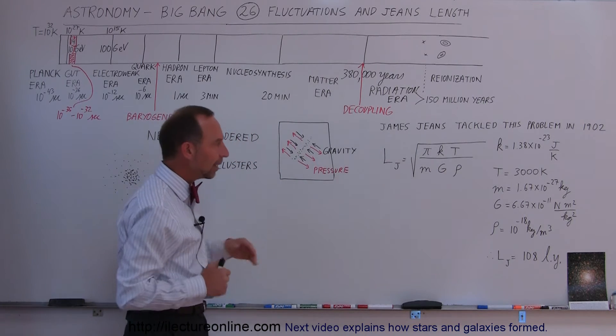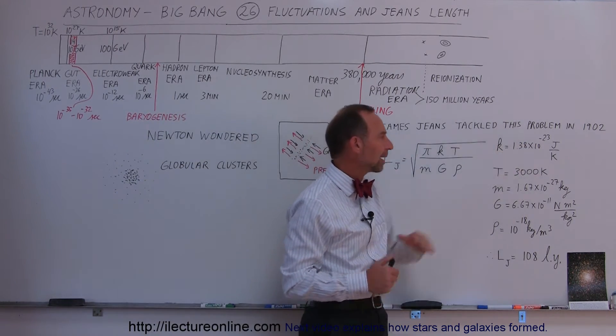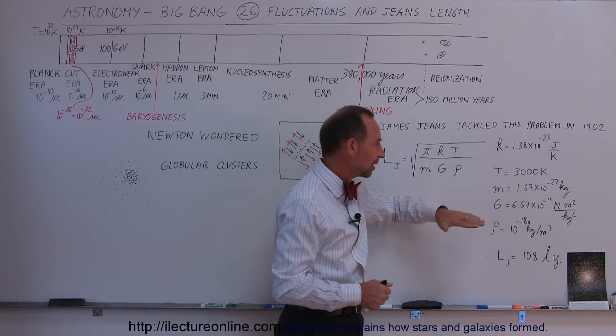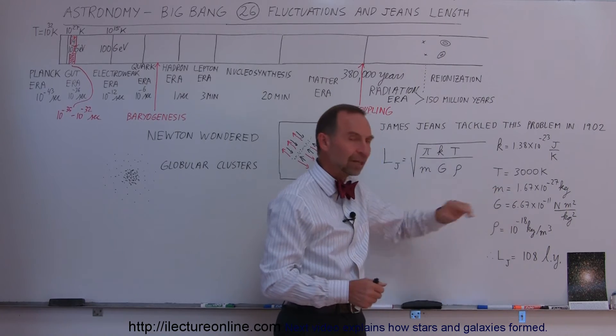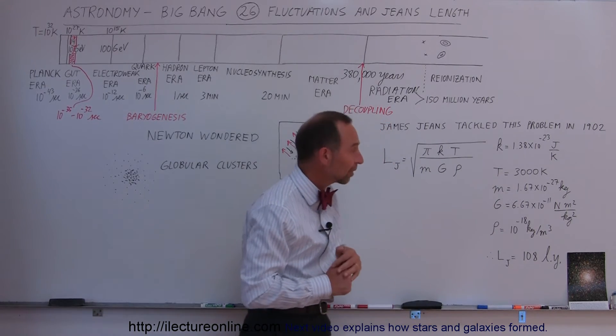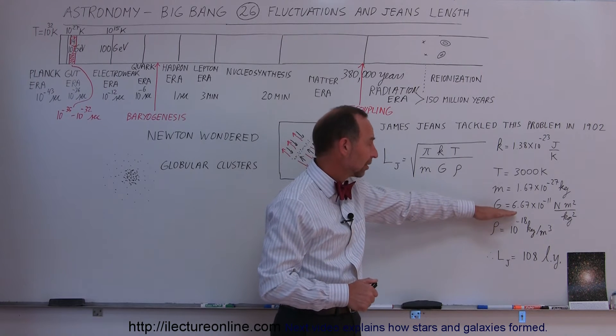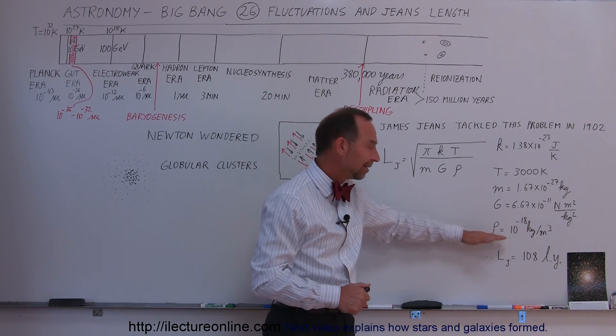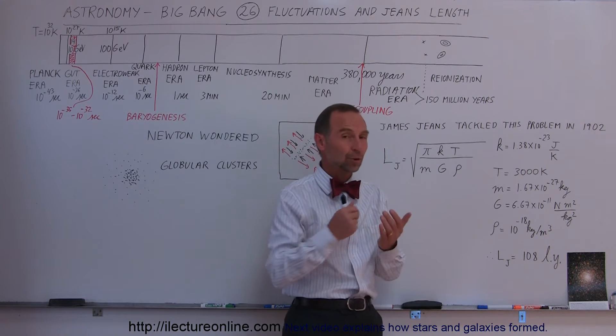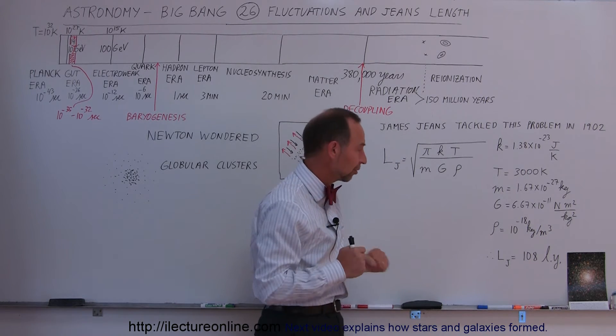And so when we work that out, the Boltzmann constant is 1.38 times 10 to the minus 23 joules per Kelvin. The temperature at the coupling was 3000 Kelvin. The mass for these atoms, which is primarily hydrogen, was 1.67 times 10 to the minus 27 kilograms. The gravitational constant is well known. The density at the time was estimated to be 1 times 10 to the minus 18 kilograms per cubic meter, which is much more dense than the universe is today.